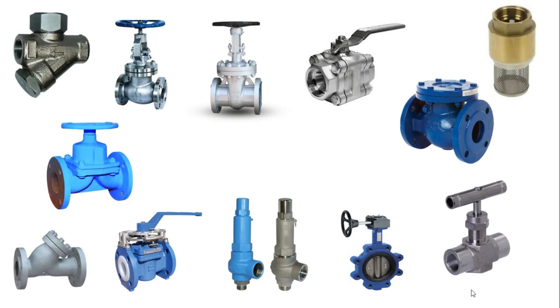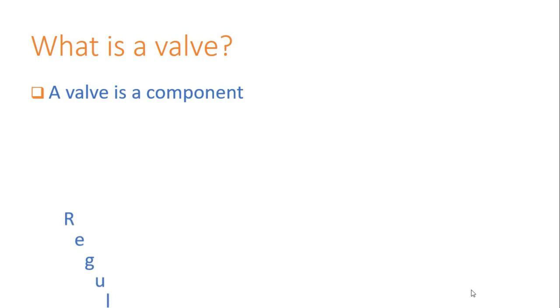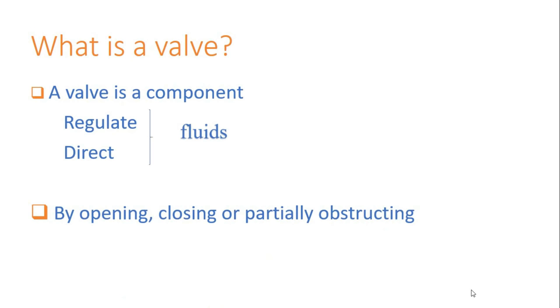Hello friends, welcome to our channel. Today we are going to talk about all kinds of valves and their functions. A valve is a component used in piping networks to regulate or direct the flowing fluid by opening, closing, or partially obstructing.